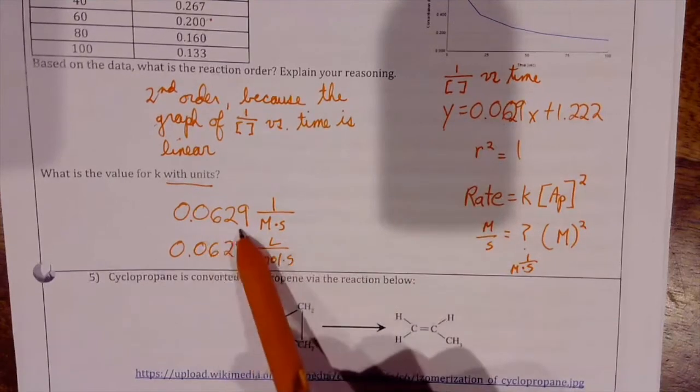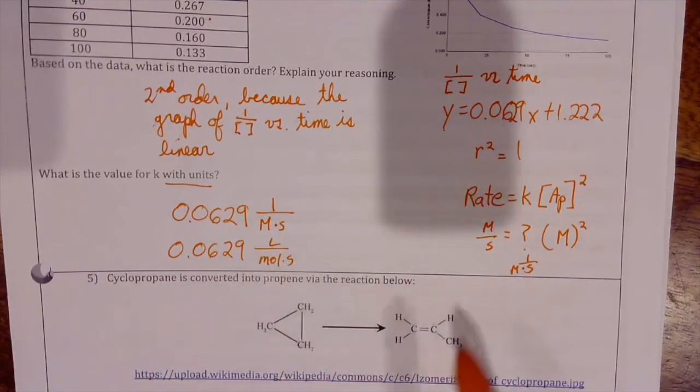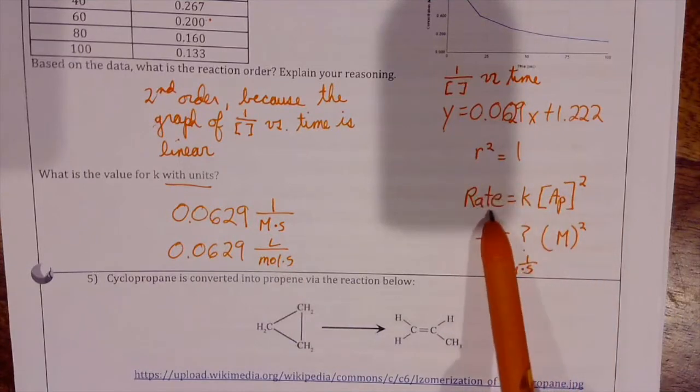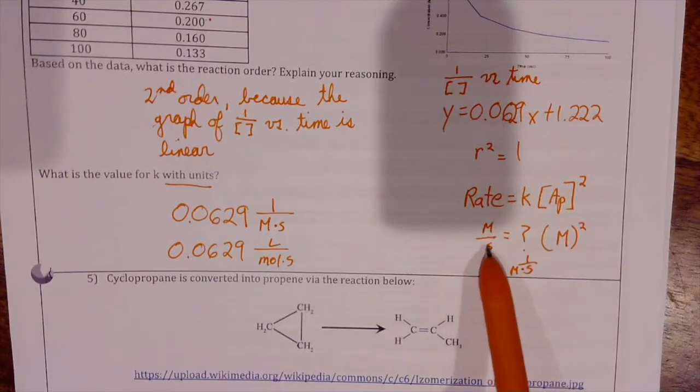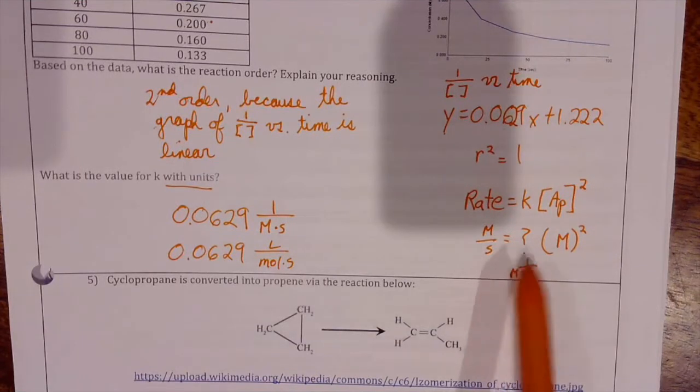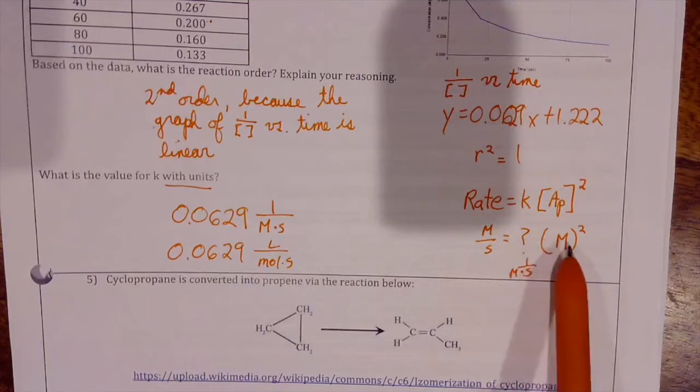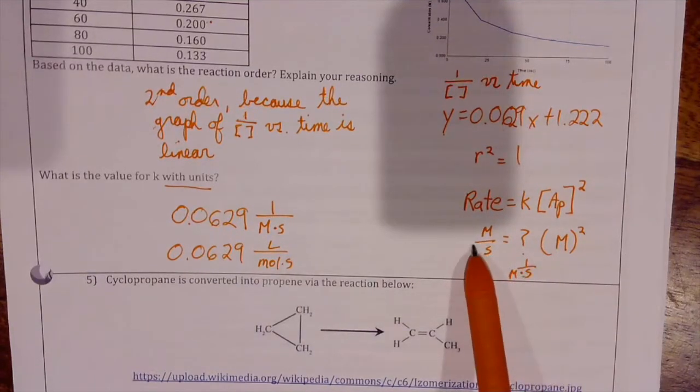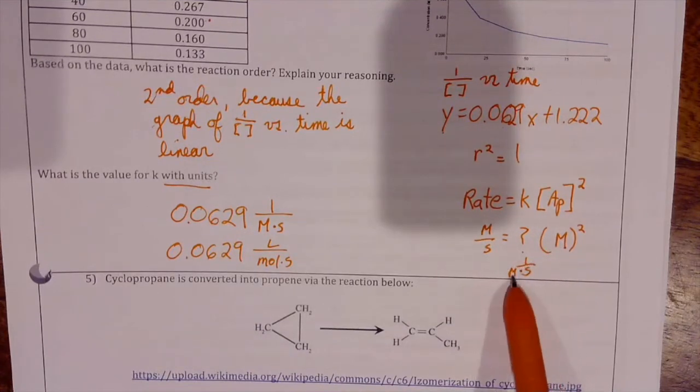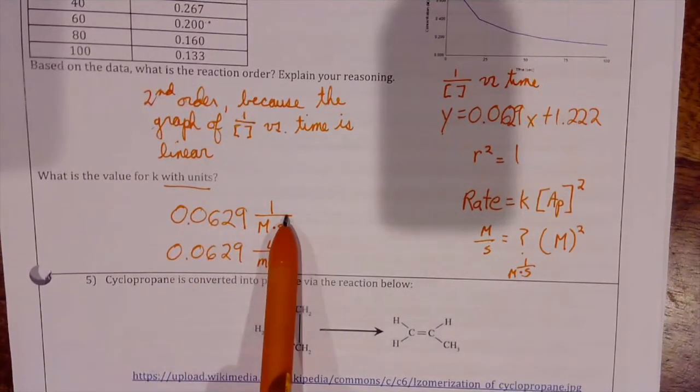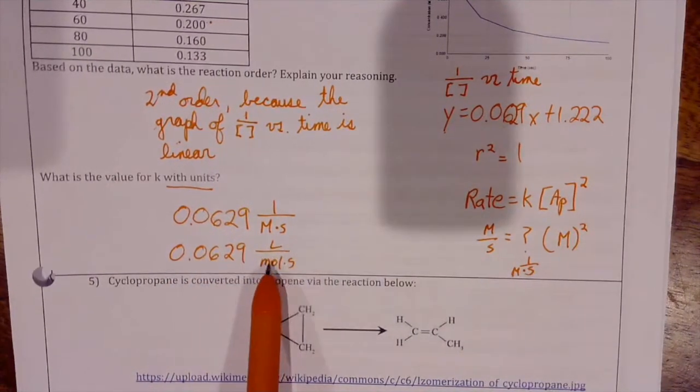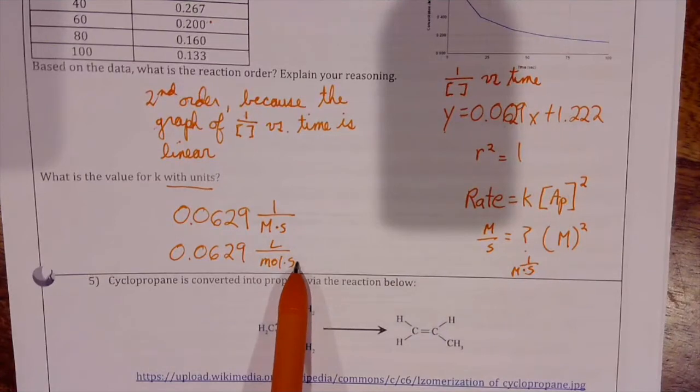My value for k is going to come from the slope of my line, so my value for k is 0.0629. In order to figure out what the units are, we need to come back to this equation. We know that this is going to be measured in molarity and it's squared, and we know that the rate is going to be measured in molar per second. So we need the units of k to cancel out so that we wind up with molar per second on this side, so I'm going to have to have 1 over molar per second, which is 0.0629 liters per mole per second.